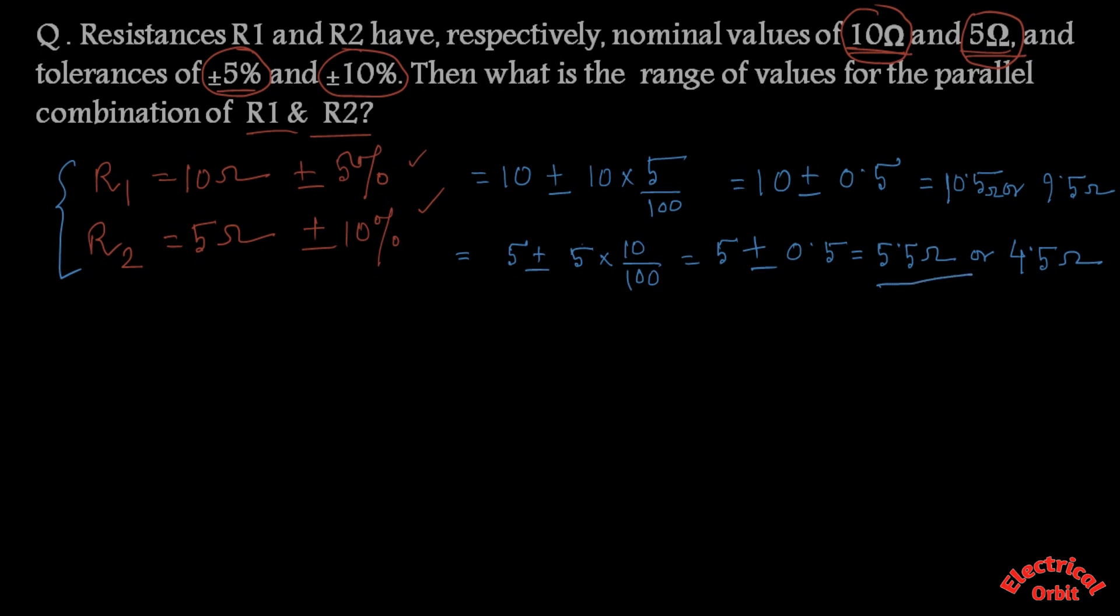Now for equivalent resistance determination, we know R equivalent for parallel combination of R1 and R2 is equal to R1 times R2 divided by R1 plus R2. So in the first case we have to take the higher range value considering the 5% and 10% tolerance.